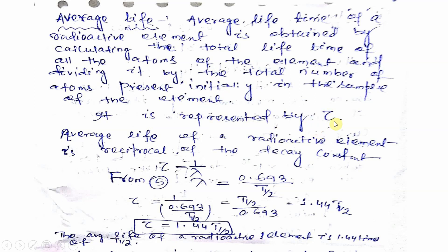The average life is represented by the symbol tau. Mathematically, tau equals 1 by lambda, where lambda is the decay constant. The physical statement tells us it is the total time period within which the substance reduces completely, and mathematically the average life is defined as the reciprocal of the decay constant.